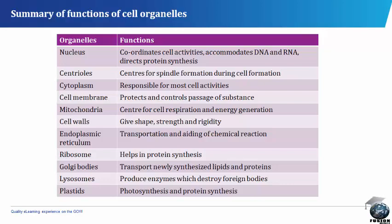The cell wall gives shape, strength and rigidity. The endoplasmic reticulum aids transportation and chemical reactions. The ribosome helps in protein synthesis. The Golgi bodies transport newly synthesized lipids and proteins. The lysosomes produce enzymes which destroy foreign bodies. The plastids help in photosynthesis and protein synthesis.